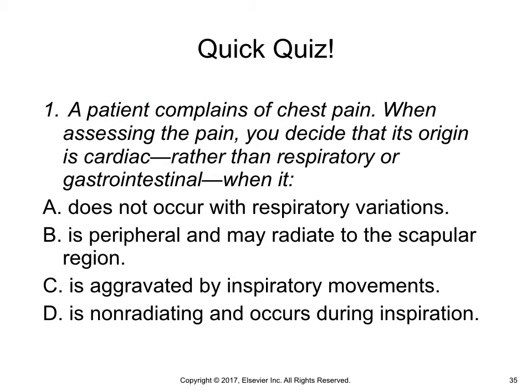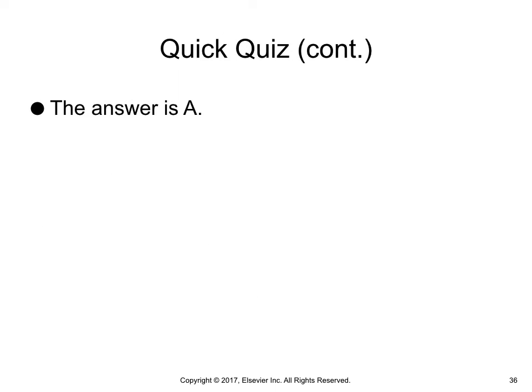Time for a quick quiz: a patient complains of chest pain. When assessing the pain, you decide that its origin is cardiac rather than respiratory or gastrointestinal when it: (a) does not occur with respiratory variations, (b) is peripheral and may radiate to the scapular region, (c) is aggravated by inspiratory movements, or (d) is non-radiating and occurs during inspiration. The answer is (a) — does not occur with respiratory variations.